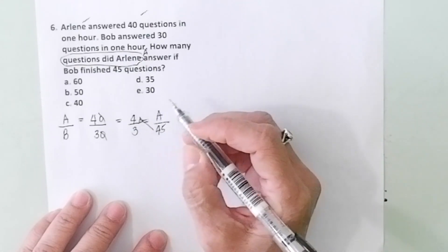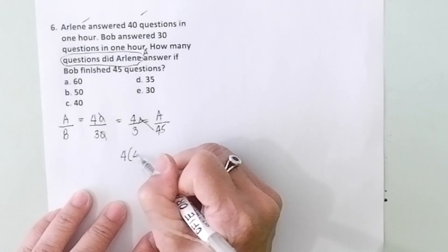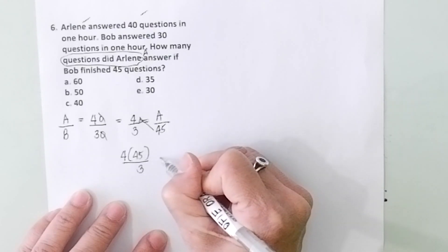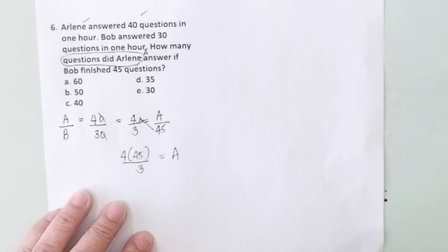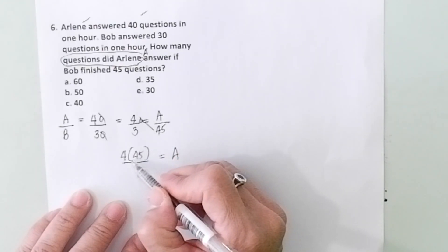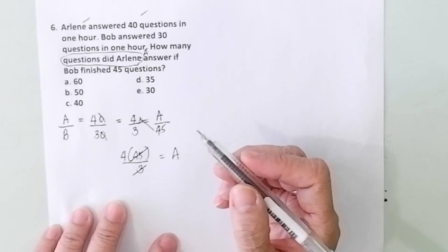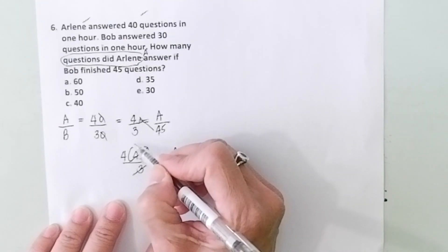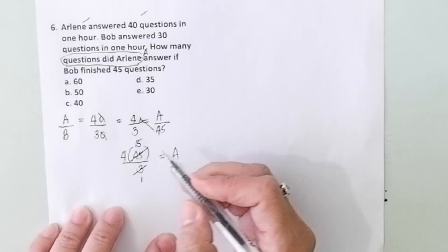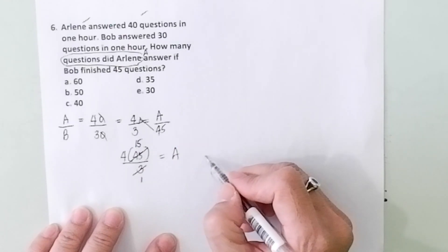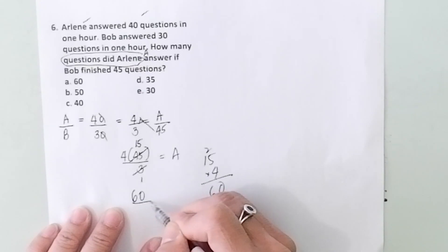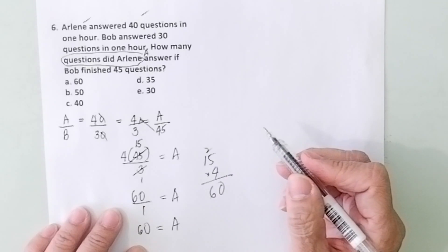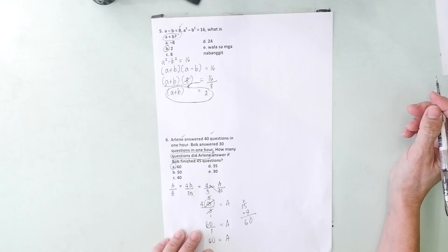If you're answering questions like this, you just have to cross multiply, take a shortcut. So you get 4 times 45 divided by 3 gives you A. Then don't multiply 45 and 4, that will take a long time. You just have to cancel: 45 divided by 3 is 15, 3 divided by 3 is 1. 15 times 4, 20 carry 2, that's 60 over 1 is A. So A is equal to 60. So the correct answer is letter A.